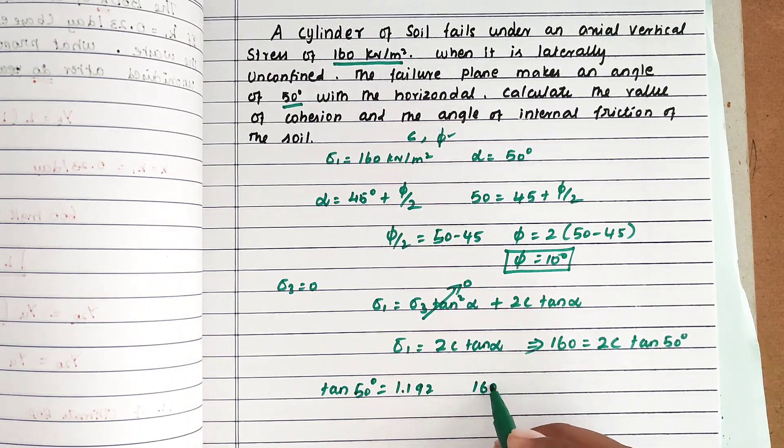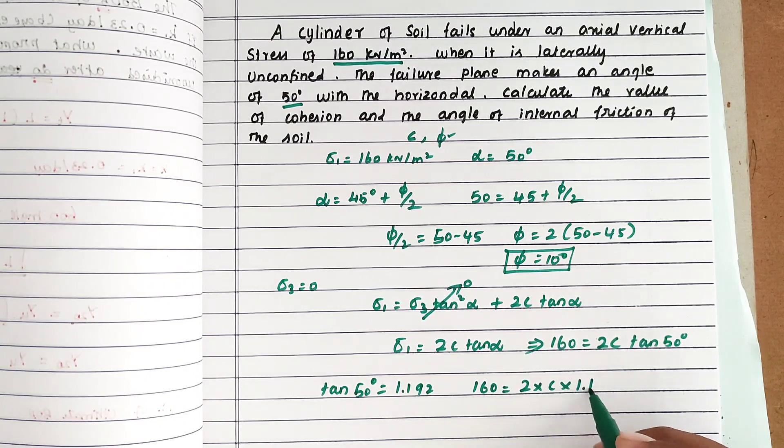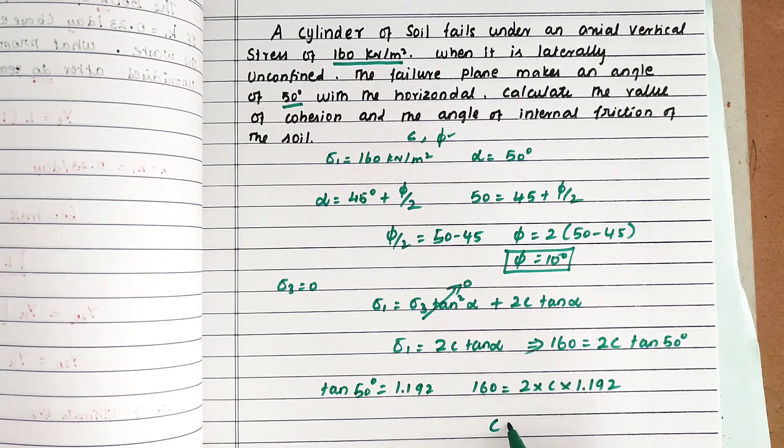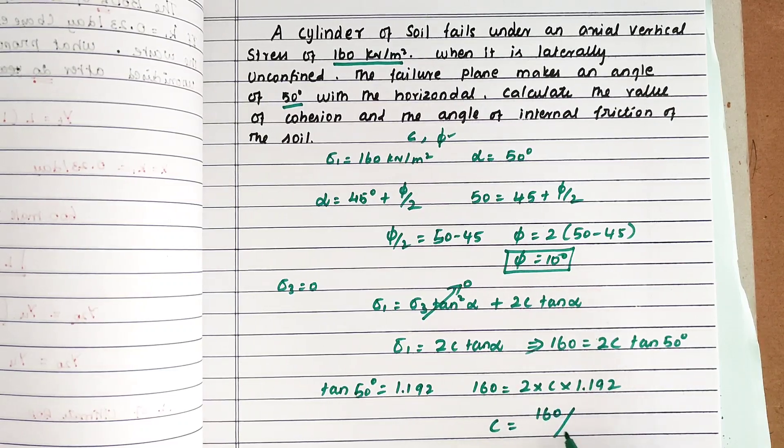So 160 equals 2 times c times 1.192. Therefore, c equals 160 divided by 2 times 1.192.